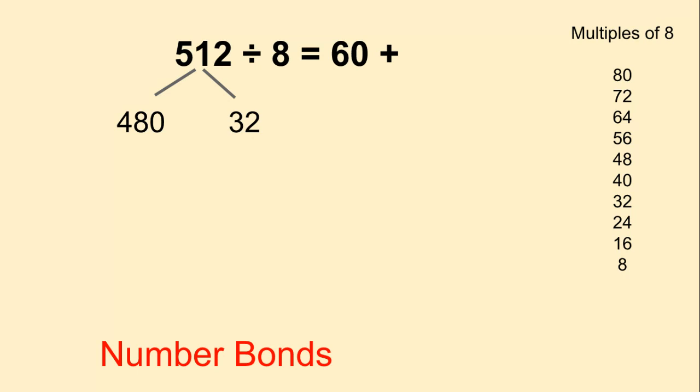So I just took that 512 and I broke it up into two numbers that I know are multiples of 8. 8 times 60 is 480. 8 times 4 is 32. So that means 8 times 64 is 512. So 512 divided by 8 is 64.